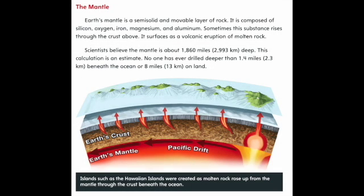The mantle. Earth's mantle is a semi-solid and movable layer of rock. It is composed of silicon, oxygen, iron, magnesium, and aluminum. Sometimes this substance rises through the crust above, surfacing as a volcanic eruption of molten rock. Scientists believe the mantle is about 1,860 miles, or 2,993 kilometers, deep.